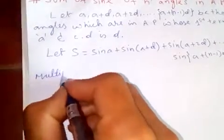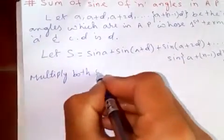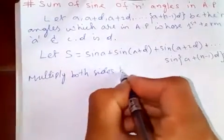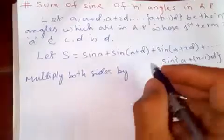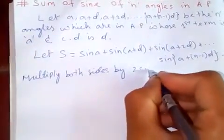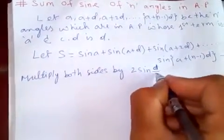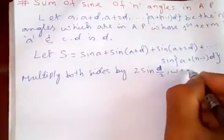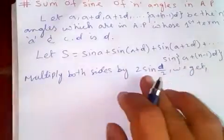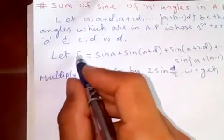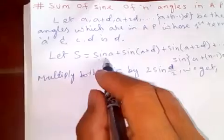Now multiply both sides by 2 sin(D over 2), where D is the common difference. Now let's work this out.